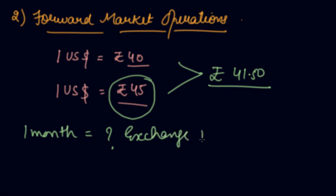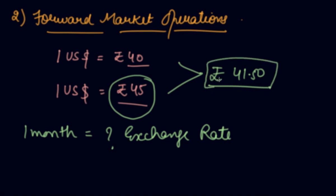The exchange rate changes every second in the market due to market forces of demand and supply, so after one month you don't know what the rate will be when you have to make the payment. So you enter into a forward market contract, agreeing that at this fixed rate only you will make the payment, whatever the prevailing market rate may be after one month.